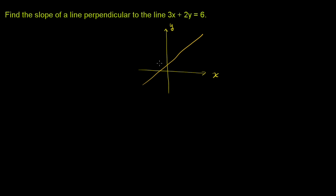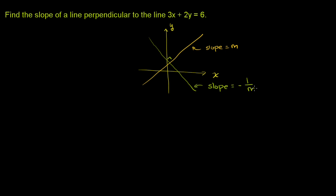Let's say I have a line here that has a slope of m. A line that is perpendicular to this line would intersect it at 90 degrees, so it would look something like this. This would be a 90 degree angle. And the slope here — I won't prove it in this video, we talk about it in other videos — the slope here is going to be equal to the negative reciprocal of this line's slope, so negative 1 over m.